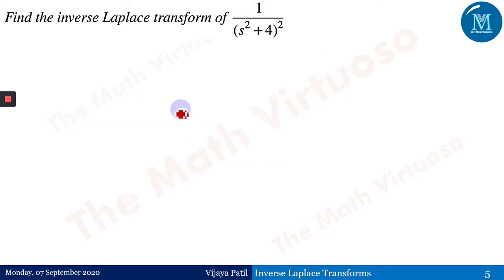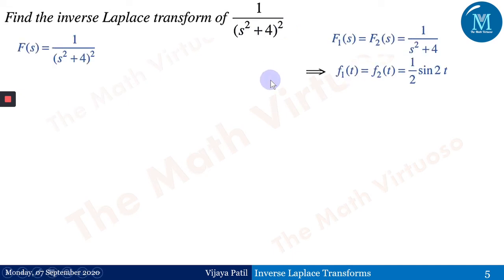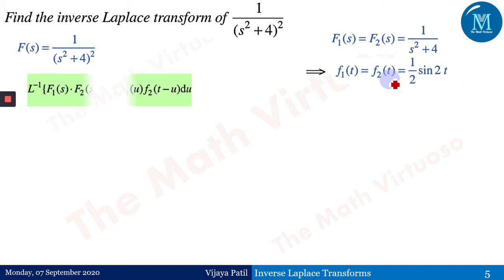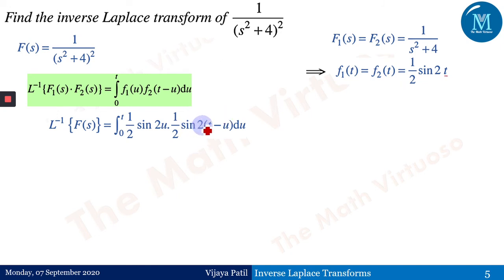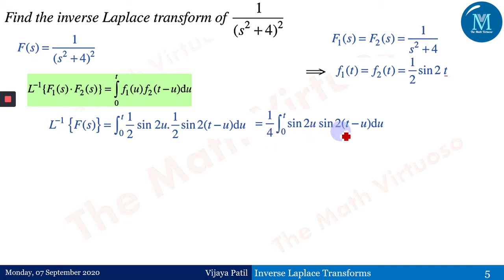Find the inverse Laplace transform of 1/(s²+4)². Since it is squared, f1(s) = f2(s) = 1/(s²+4), both with inverse ½sin(2t). The convolution formula gives ∫₀ᵗ ½sin(2u) · ½sin(2(t−u)) du = (1/4)∫₀ᵗ sin(2u)·sin(2(t−u)) du.